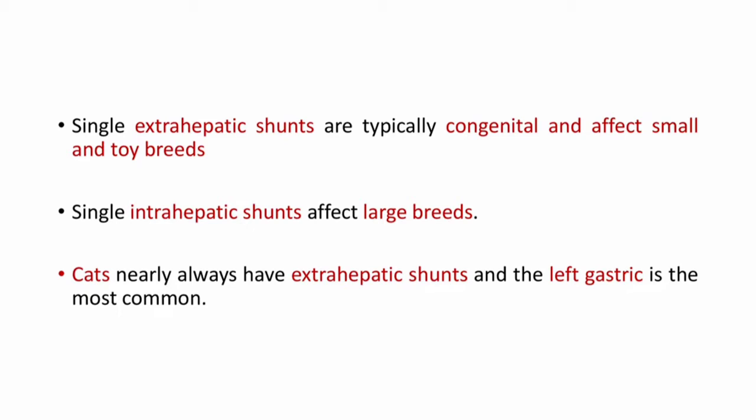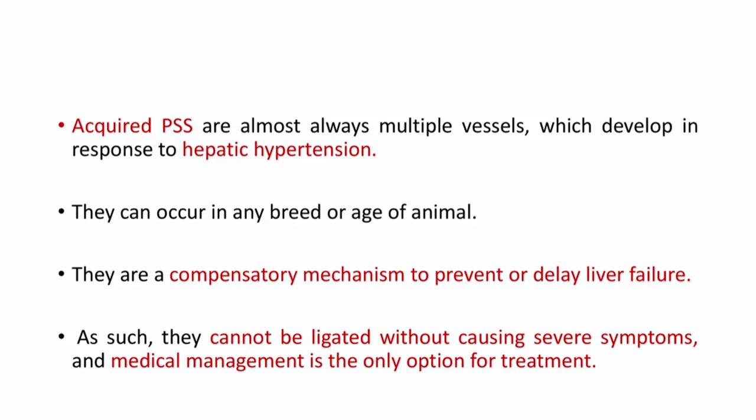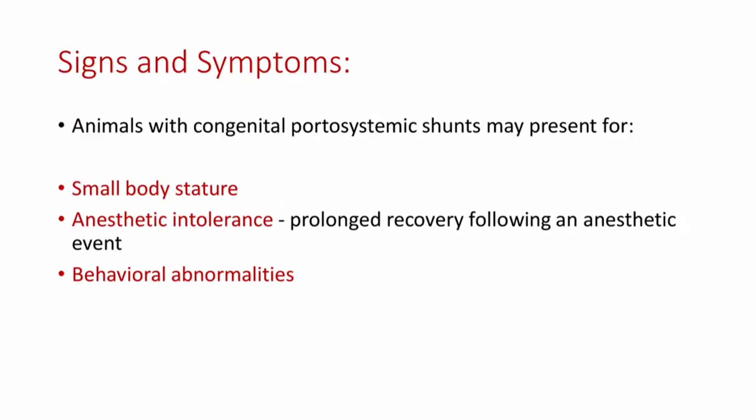Single extrahepatic shunts are typically congenital and affect small and toy breeds, while single intrahepatic shunts affect large breeds. In cats, they nearly always have extrahepatic shunt and the left gastric is the most common. Acquired PSS are almost always multiple vessels which develop in response to hepatic hypertension. They can occur in any breed or age of animal and are a compensatory mechanism to prevent or delay liver failure. As such, they cannot be ligated without causing severe symptoms, and medical management is the only option for treatment of acquired PSS conditions.